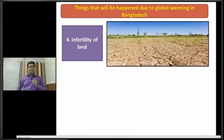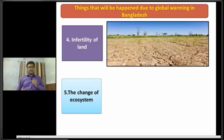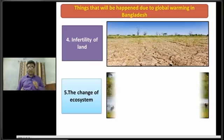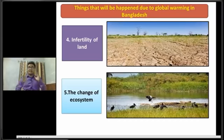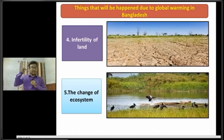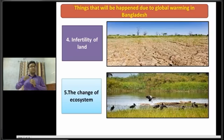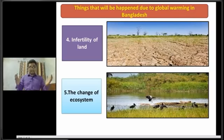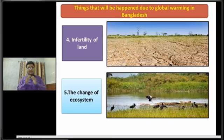Dear students, now I am going to discuss about the next impact, that is the change of ecosystem. Basically, ecosystem is a large community of living organisms in a particular area. Due to global warming, many ecosystems in many places of our country will be destroyed. So this will happen due to global warming in Bangladesh.